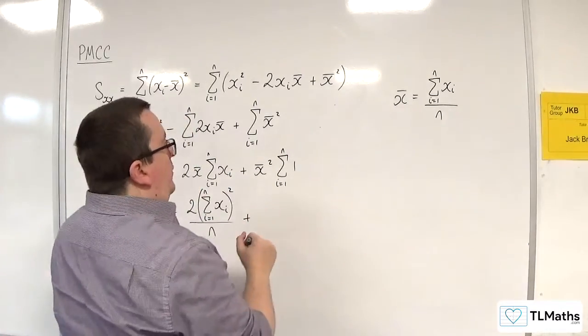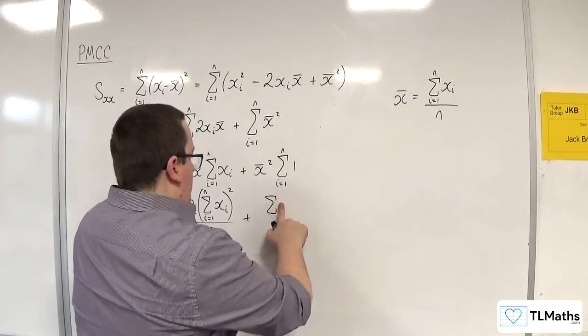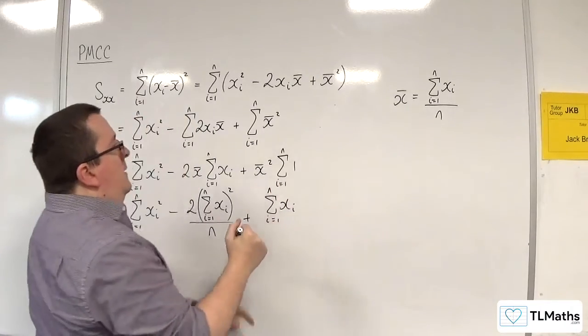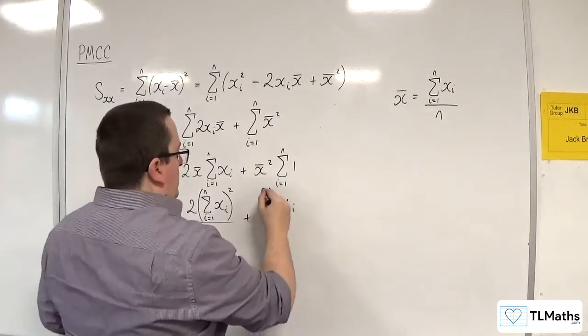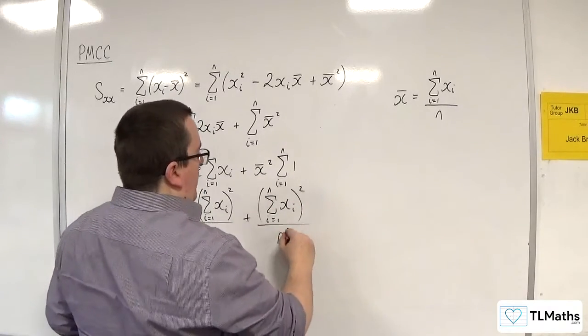So I've got plus the sum from i is 1 to n of XI, that's all squared. But I'm also squaring the denominator, so n squared. But I'm multiplying it by n.